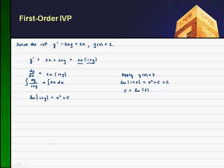So knowing that c is the natural log of 3, I can go ahead and rewrite this as the natural log of the magnitude of 1 plus y equals x squared plus the natural log of 3.